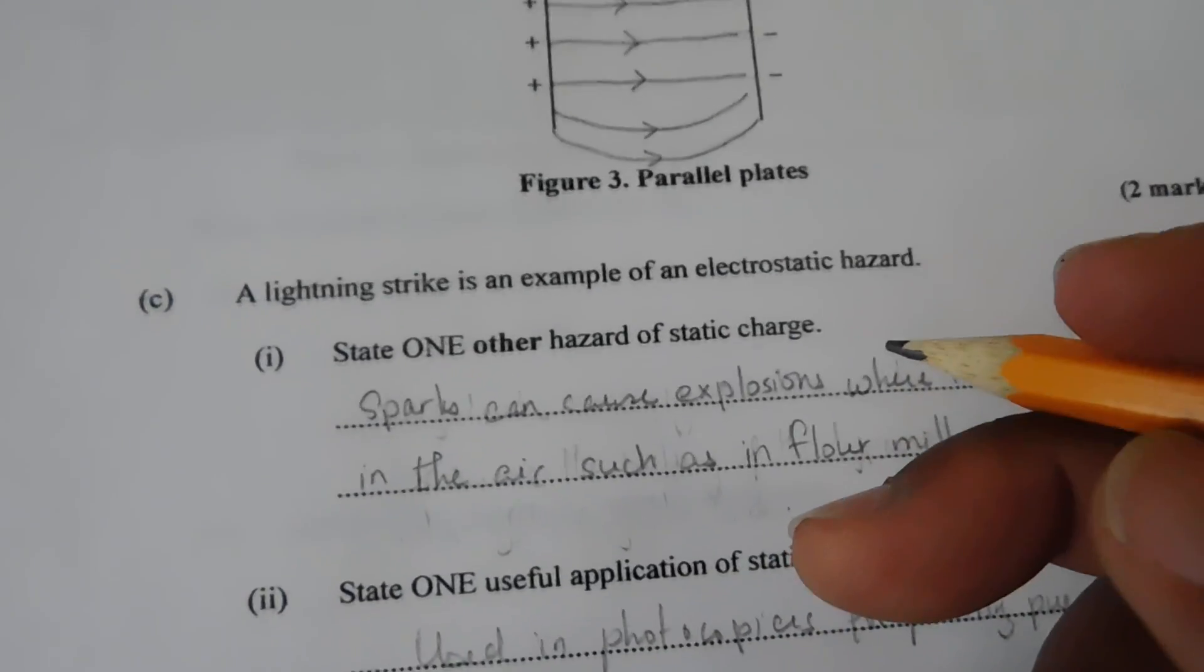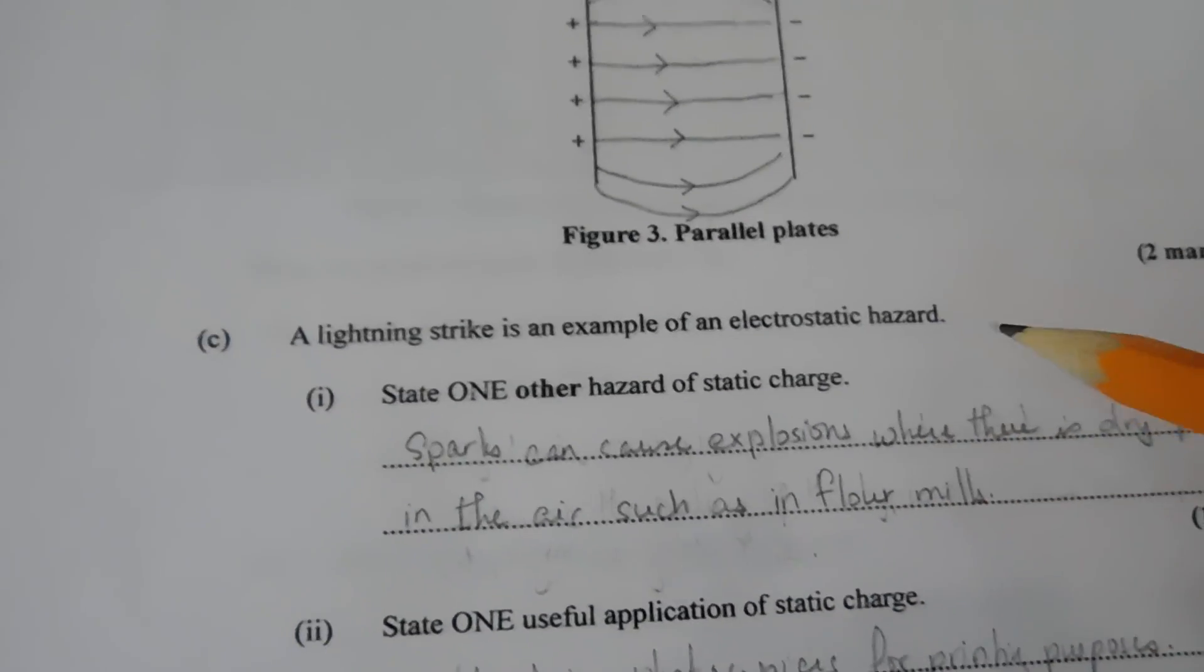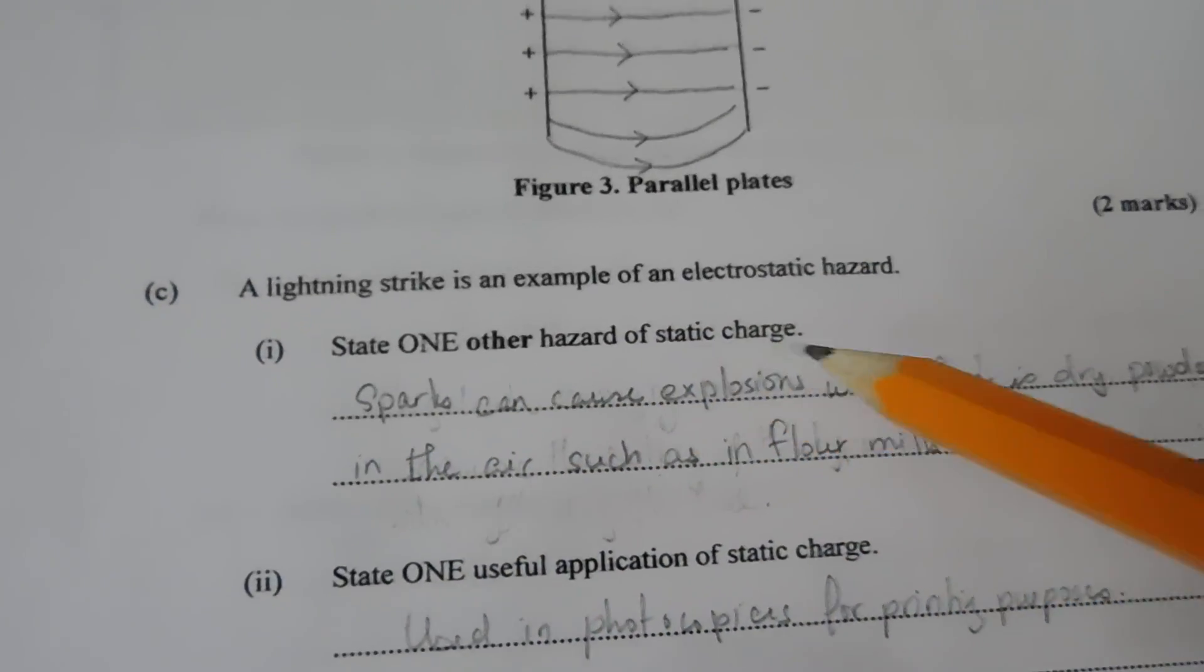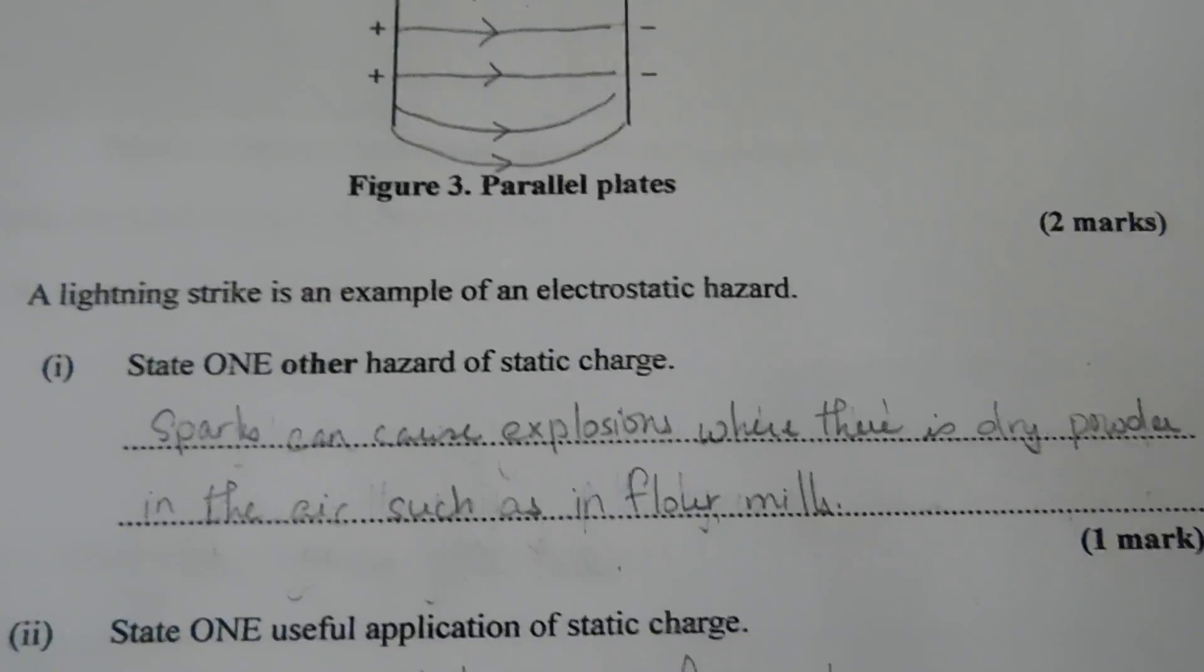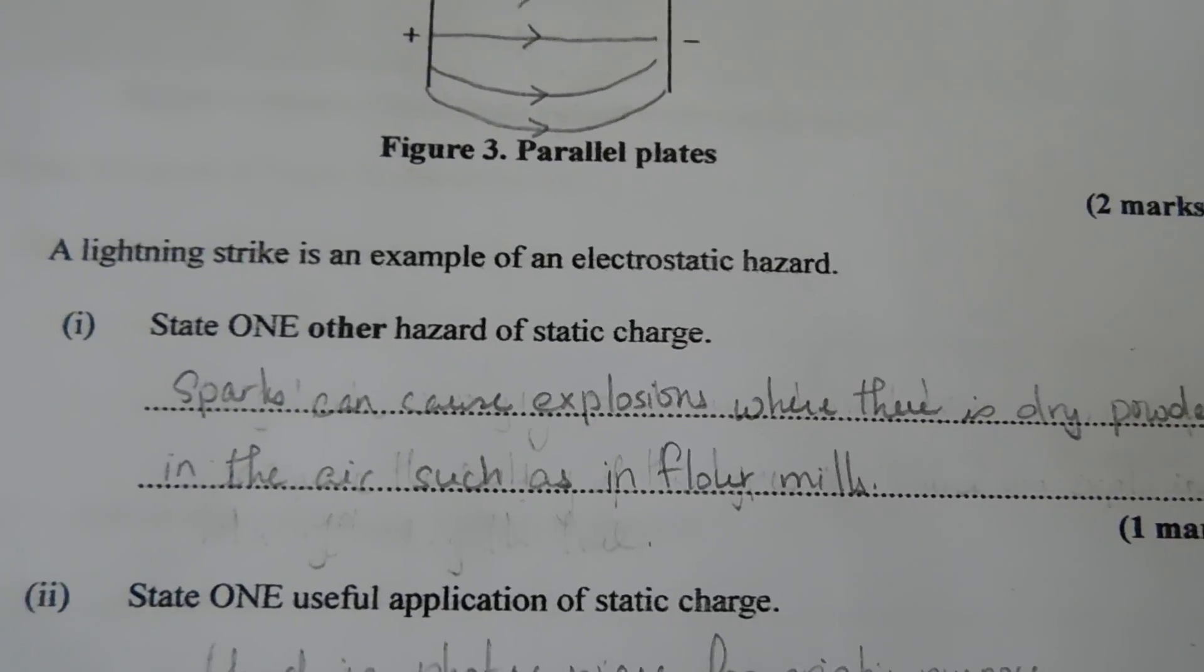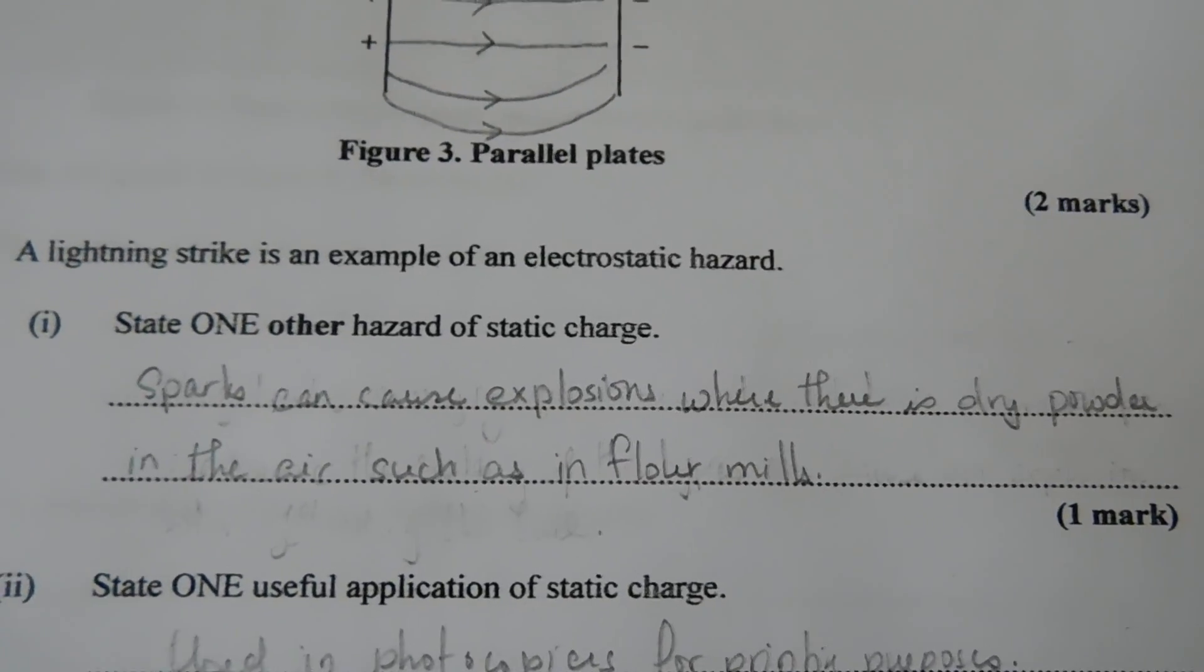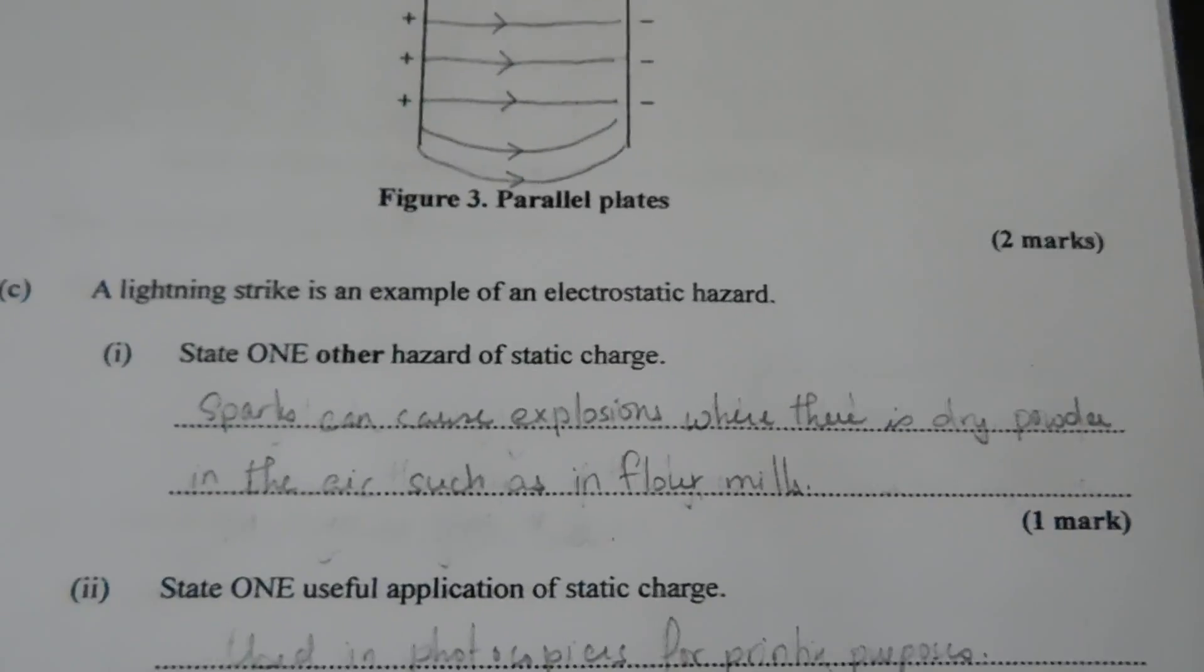A lightning strike is an example of an electrostatic hazard. State one other hazard of static charge. So another hazard of static charge is that sparks can cause explosions where there is dry powder in the air, such as in flour mills. That's one.